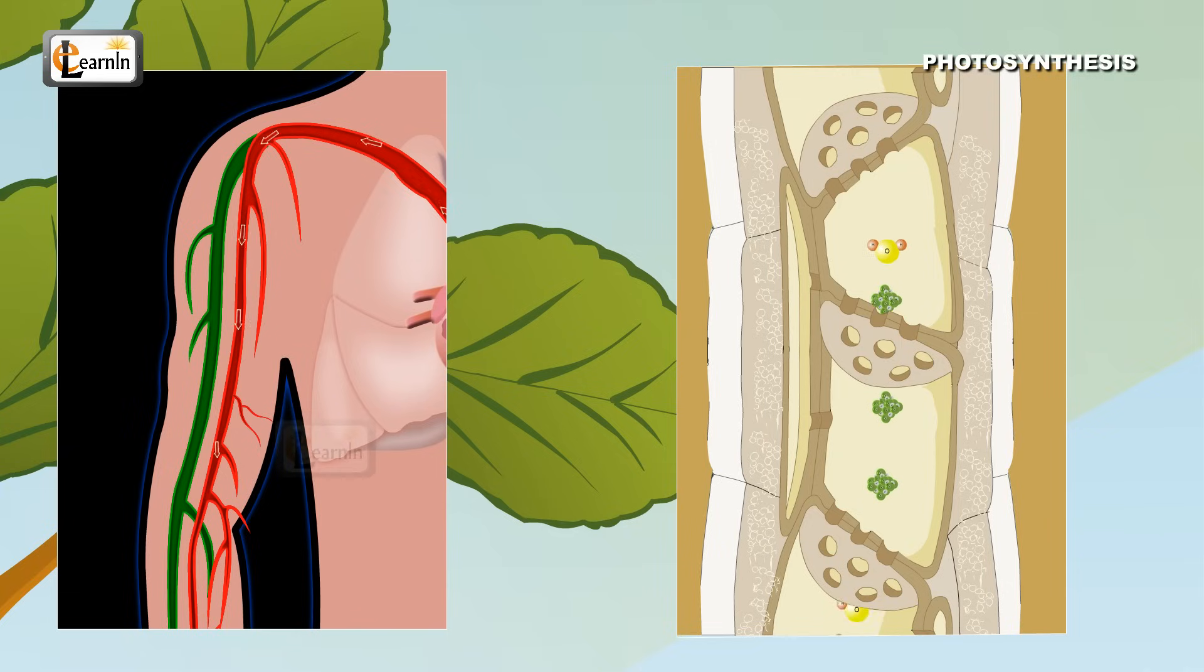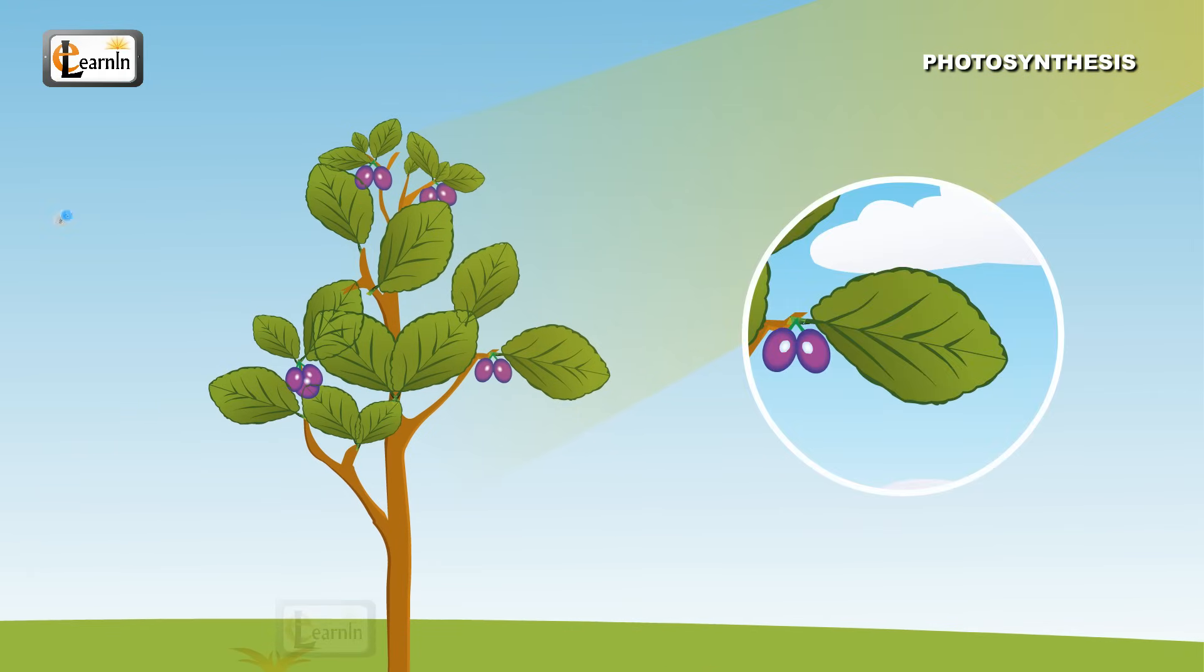Xylems in the plant are like blood vessels in the human body, that act as an important means of transportation of water and nutrients. Leaves on the plant have pores, very similar to the pores on the skin of our bodies.